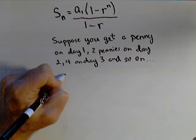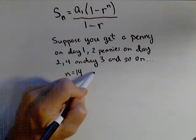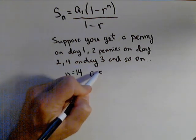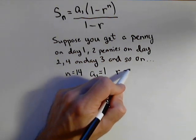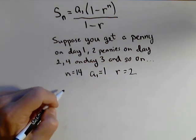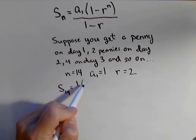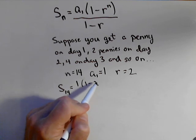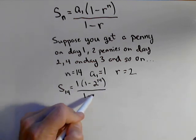Now if we're doubling every time, and we're doing it for two weeks, then n is 14. Let's just do it in pennies and we'll convert afterwards. a sub one is one, and our common ratio is two. So setting this up, S sub 14 equals one times one minus two to the 14 over one minus two.